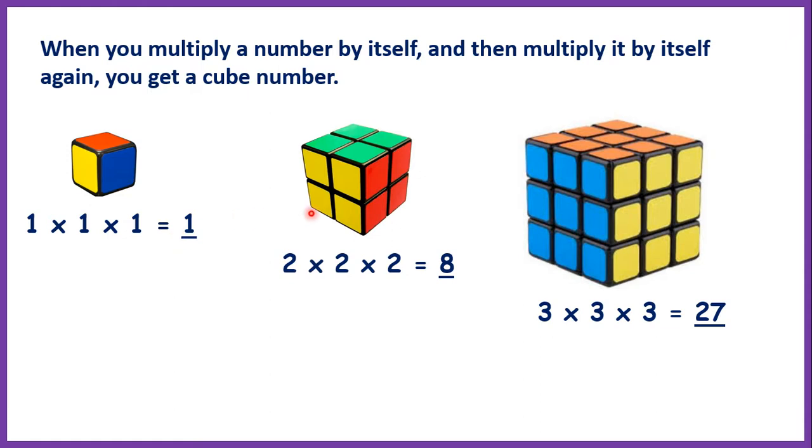So, 1, 8 and 27 are our first three cube numbers. And the symbol for cubed is this little 3 which means multiply the number by itself three times. So, 1 cubed is 1, 2 cubed is 8 because 2 times 2 times 2 is 8, and 3 cubed is 27 because multiply 3 by itself three times and you have 27.